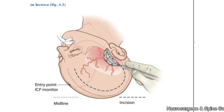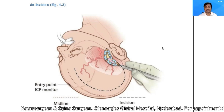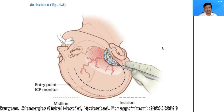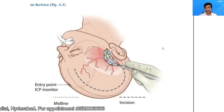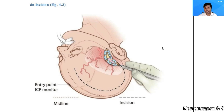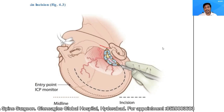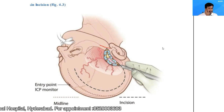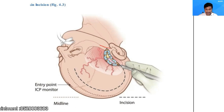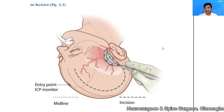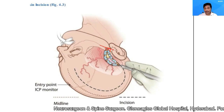Coming to the skin incision: we take a Falconer incision, which is a cushion-shaped incision. The beginning point is just one centimeter in front of the tragus, just above the zygomatic arch — which you can palpate on the patient. I start my incision here, go parallel to the tragus, and go upward just above the pinna.